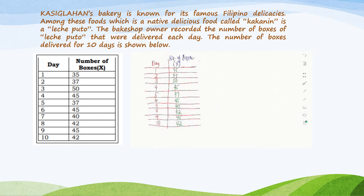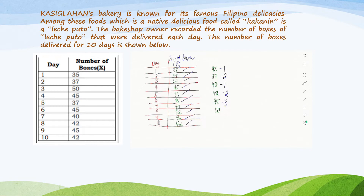Indicating the number of boxes, we have 35, 37, 40, 42, 45, and 50. After that, let us count the occurrences of each value over the 10 days. There is 1 occurrence of 35, 2 occurrences of 37, 1 occurrence of 40, 2 occurrences of 42, 3 occurrences of 45, and 1 occurrence of 50 — for a total of 10 days of distribution.